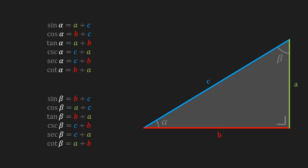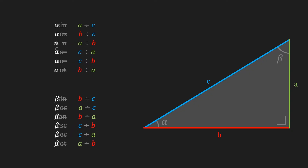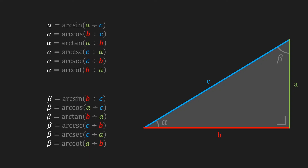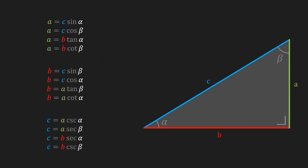We also saw that there were arc functions, so we can rewrite these formulas to calculate those. Now you can see that we've got six expressions to calculate the angle alpha and six expressions to calculate the angle beta. To calculate one of those angles, you can pick whichever expression you like, as long as you know the side lengths that are required to calculate its result.